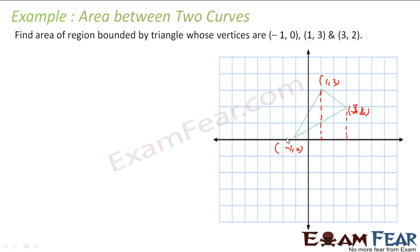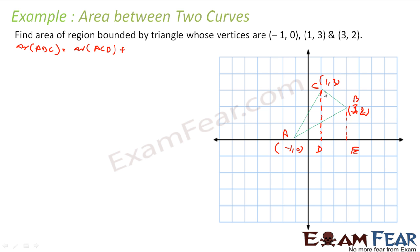Let us label some points. Let point A, B, C be the triangle vertices, and D, E, F be additional reference points on the x-axis. Now I am asked to find the area of triangle ABC. If you observe carefully, area of ABC equals area of ACD plus area of CBDE.